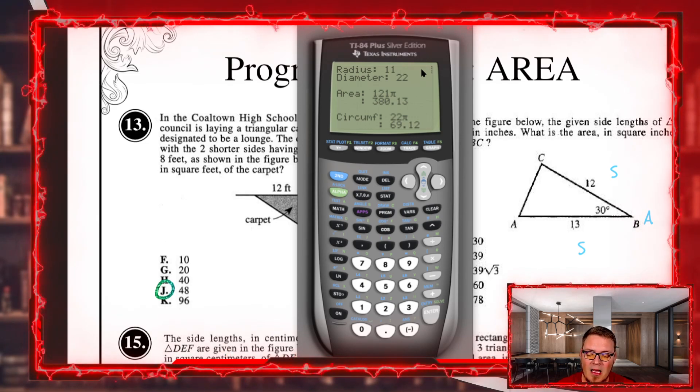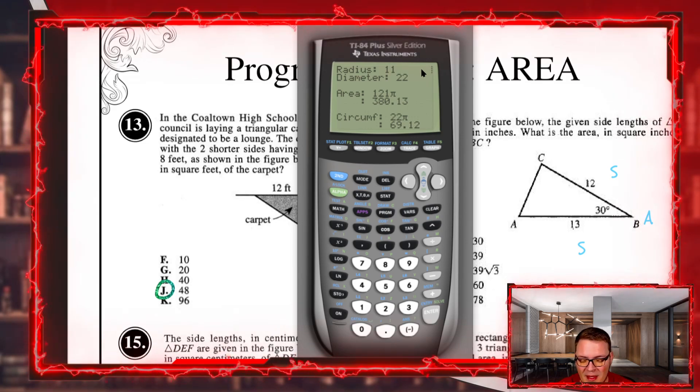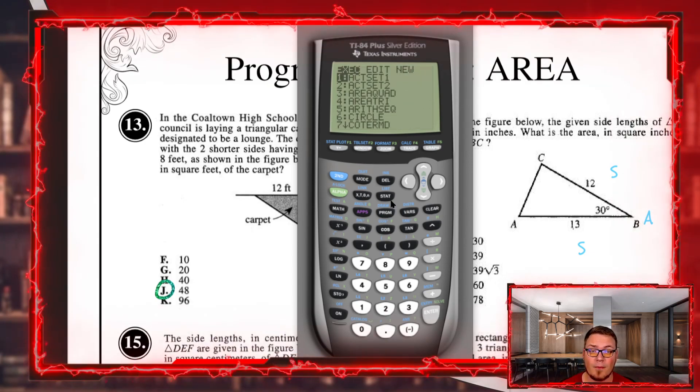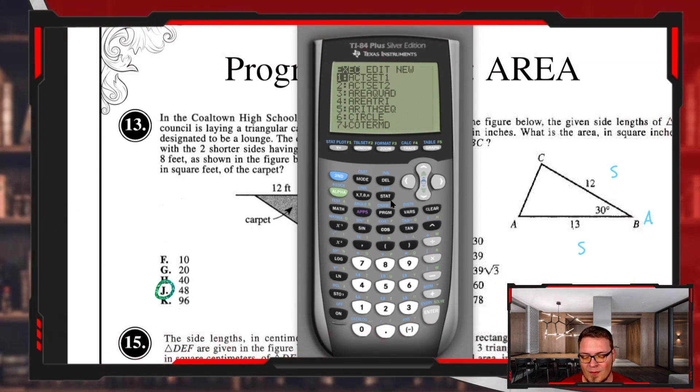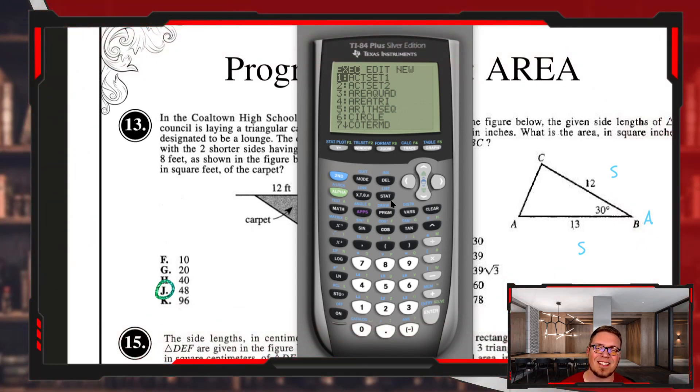That is a brief introduction to the three programs that are going to help you find anything area related: area quad, area tri, and circle. In the next video, we'll be talking about sequences. See you then.